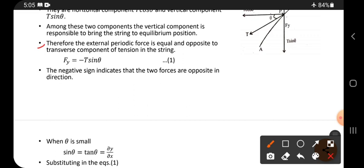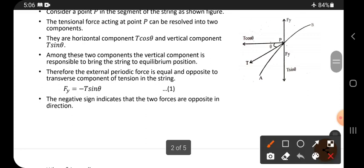Therefore, the external periodic force is equal and opposite to the transverse component of tension in the string. The plucking force is upward, so this is upward force and this is downward force. These two are opposite in direction.